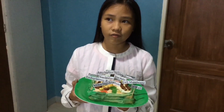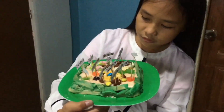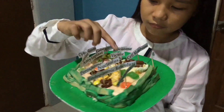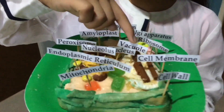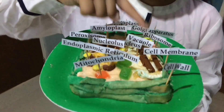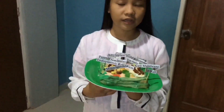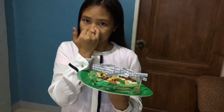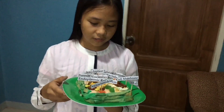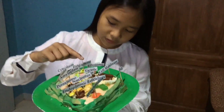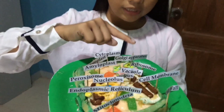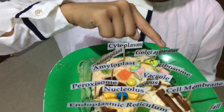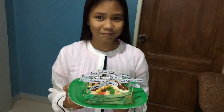Next is the vacuole. It sustains rigid pressure against the cell wall. Next is the Golgi apparatus. It is involved in distributing synthesized macromolecules to various parts of a cell.